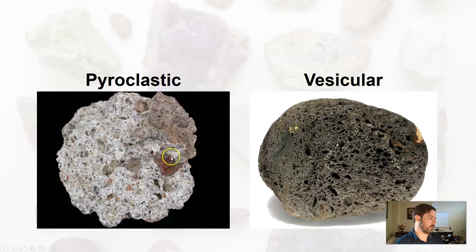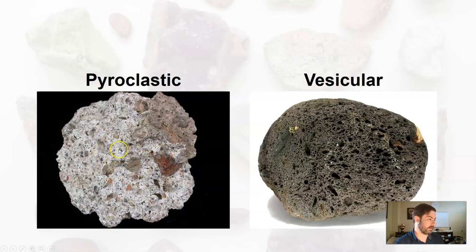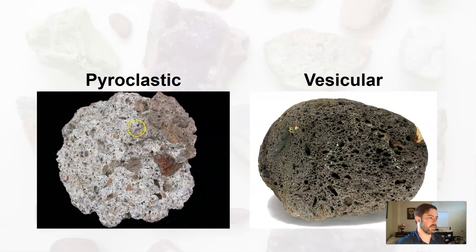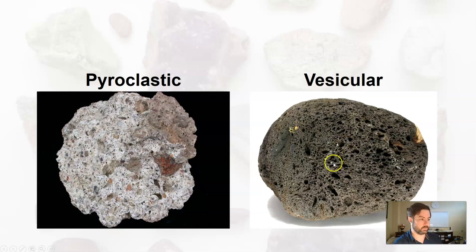Here's a good example of a pyroclastic rock — that's tuff. You can see material that was exploded out of a volcano; the lighter gray stuff is ash, a mixture of volcanic material that consolidated and squished together. And this is scoria, a vesicular igneous rock — you can see the vesicles, the holes.